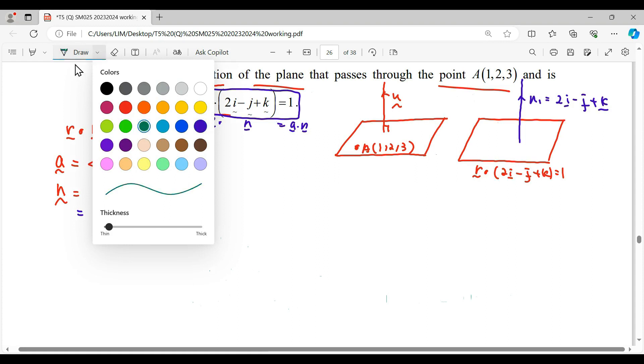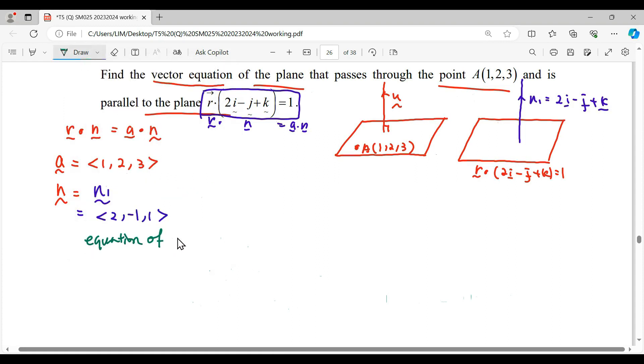Then we can proceed to calculate the equation of the plane which is R·n = A·n. For this equation, they want us to put it in vector form. Therefore, for the left-hand side, we will have R·(2i - j + k).